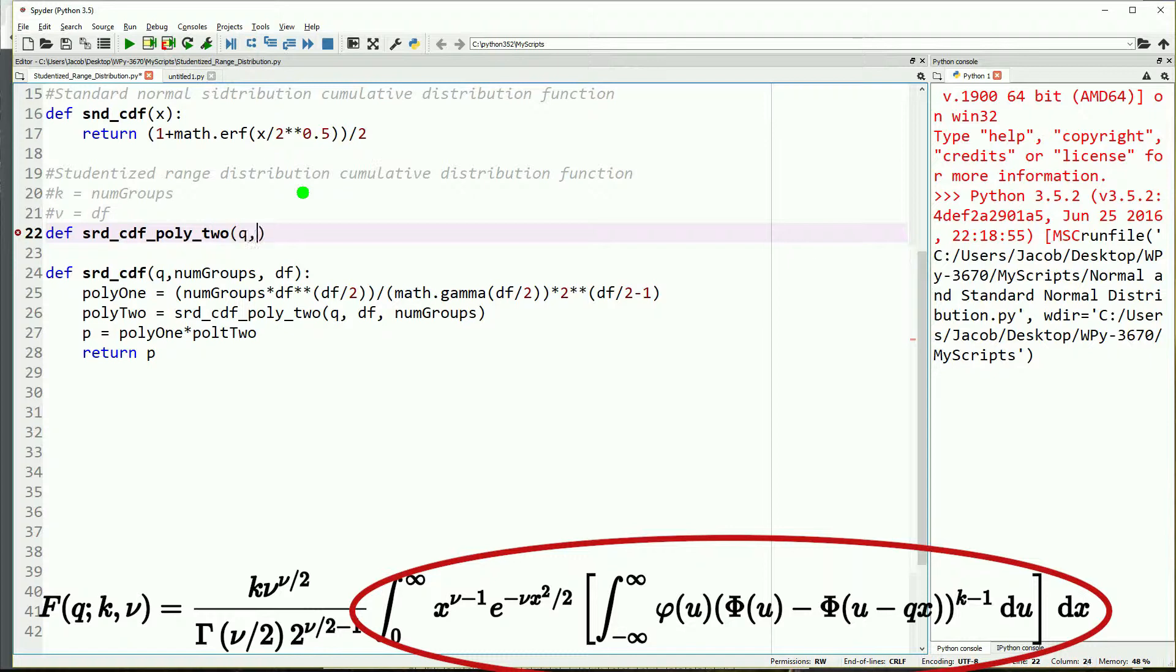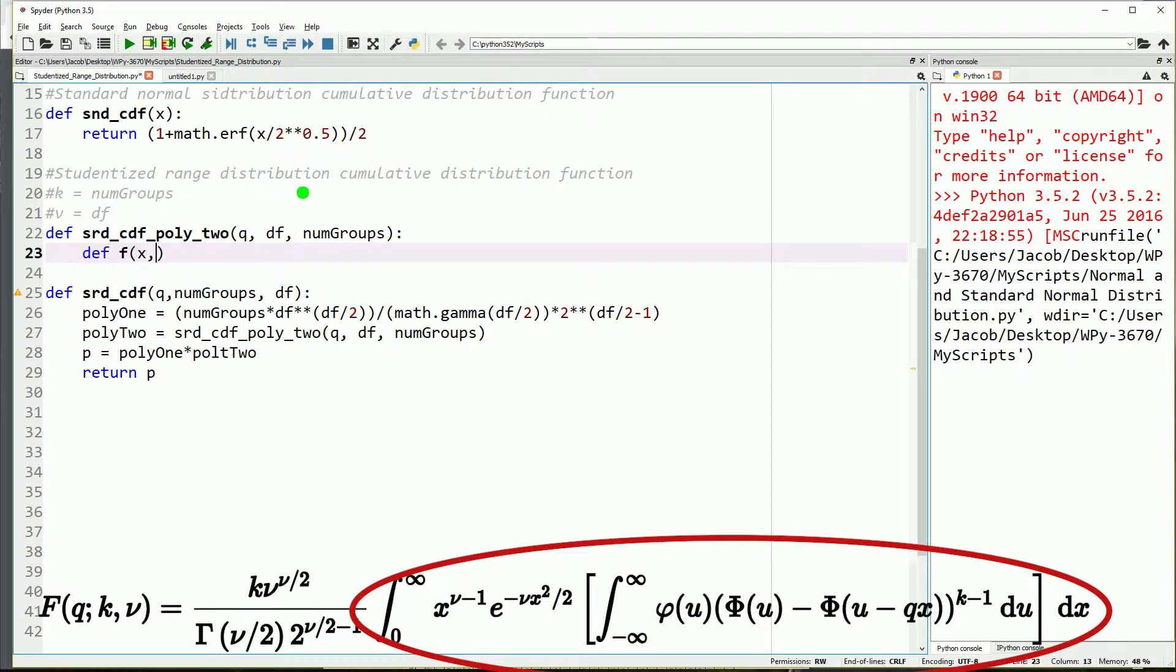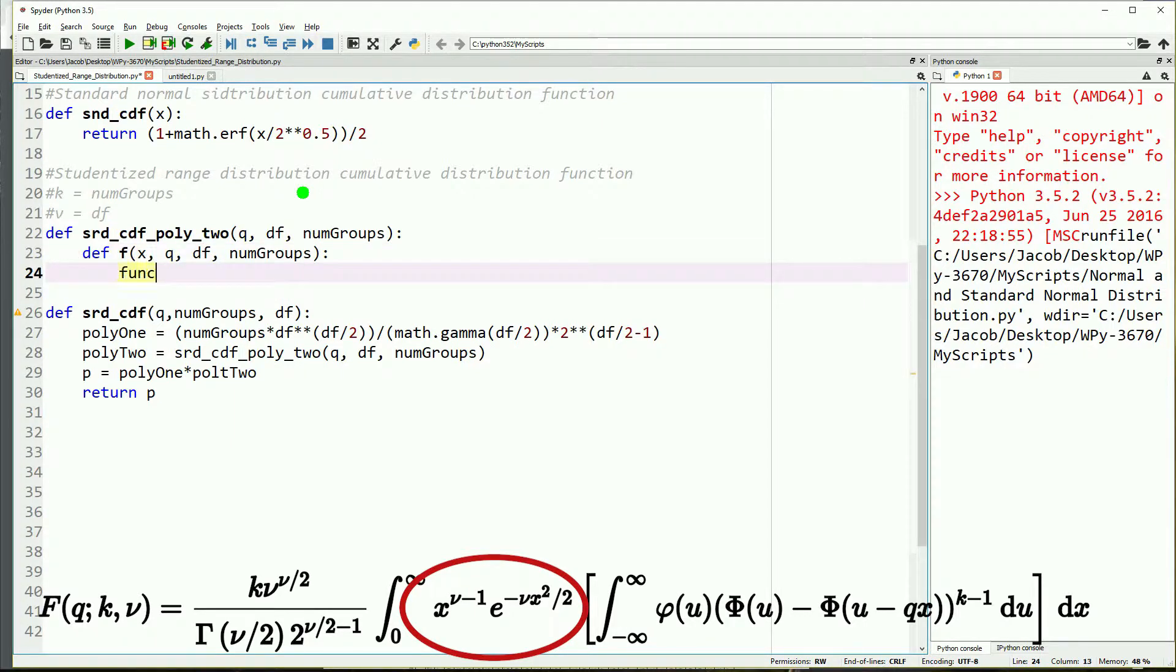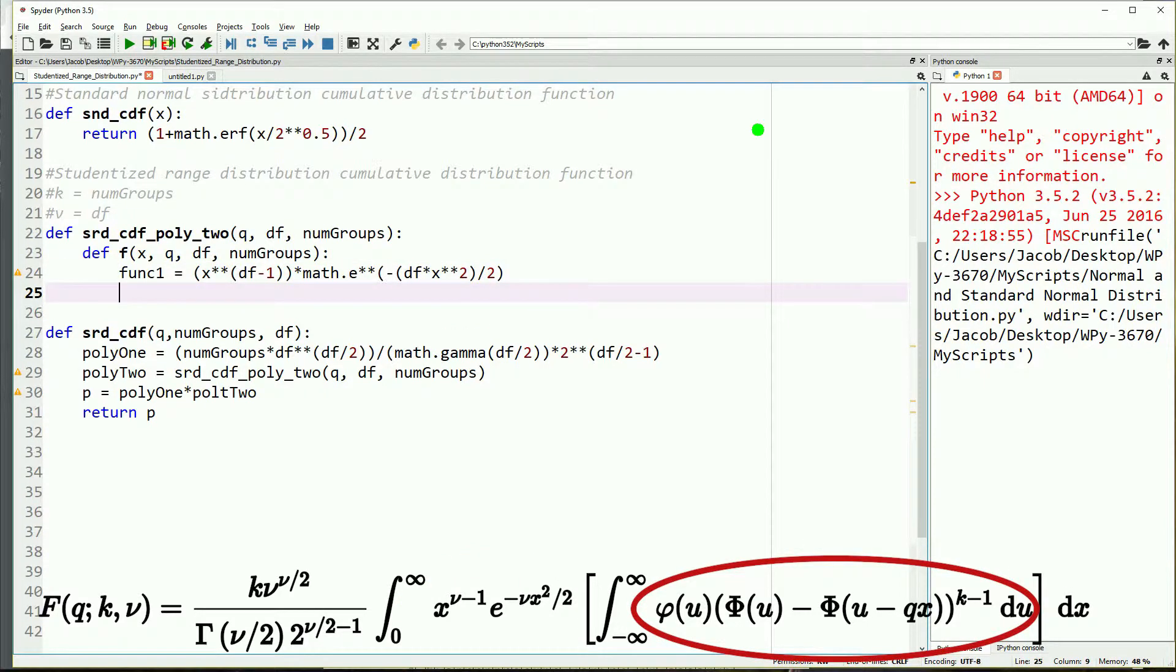Inside of this we will also be defining another function because, as you may have known from our previous tutorials, in order to take the integral of something we need a function of what the integral is being taken of. The integral is being taken with respect to x, so x from 0 to infinity and then the other three arguments within it. The first part of this function will be x to the power of degrees of freedom minus 1 times e to the power of negative degrees of freedom times x squared divided by 2.